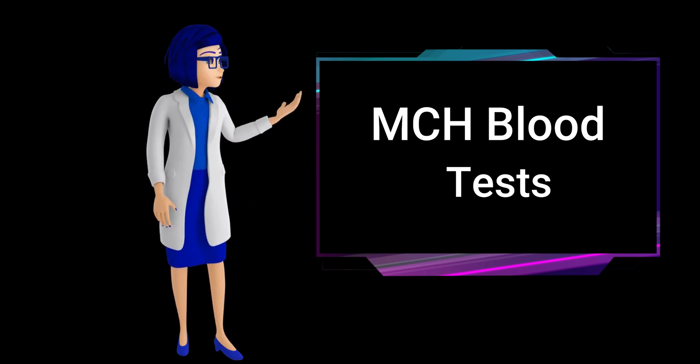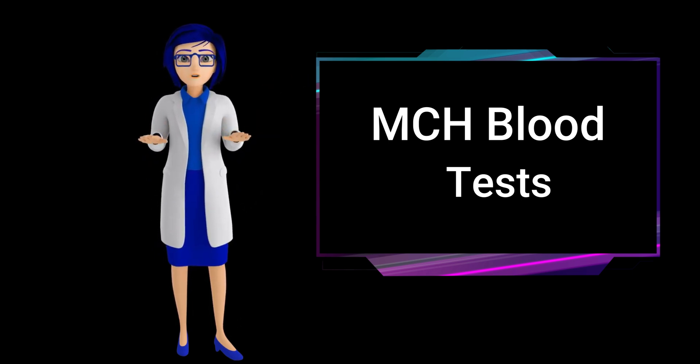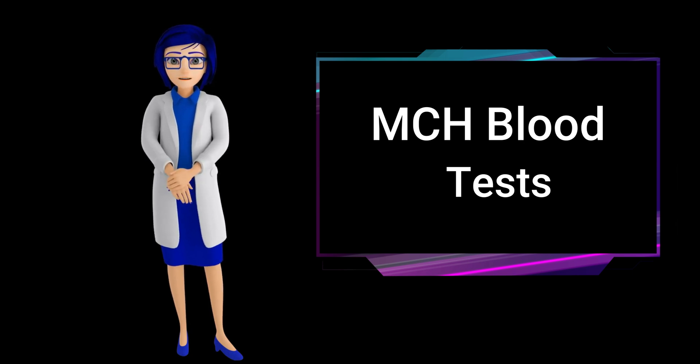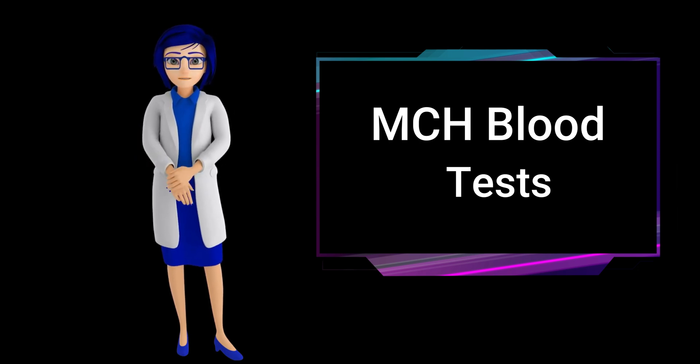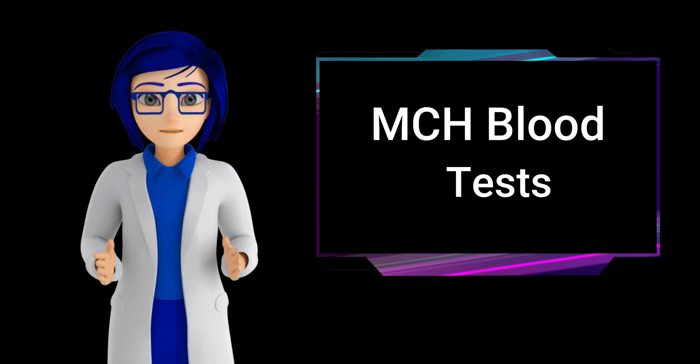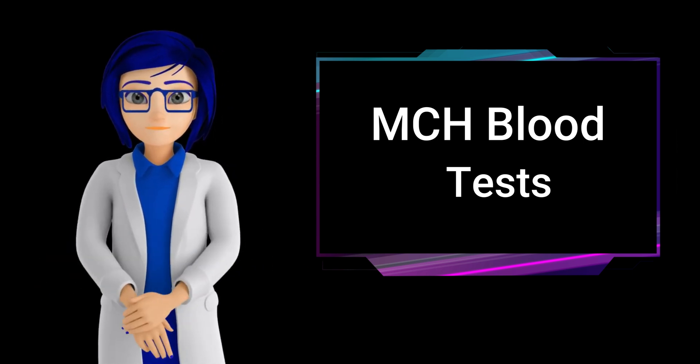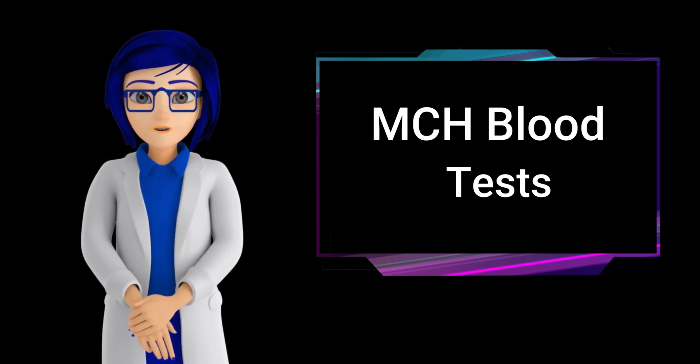MCH is often used in blood tests to help diagnose different types of anemia or other blood disorders. Comparable patterns may be observed in the MCV and MCH datasets. This is because hemoglobin tends to be more abundant in larger red blood cells than in smaller ones.